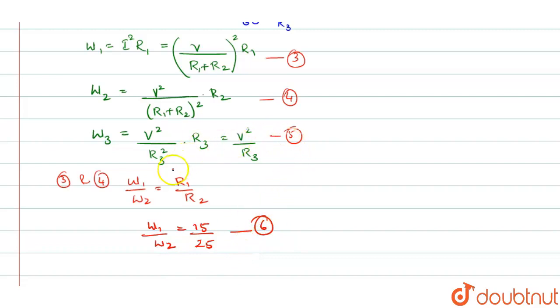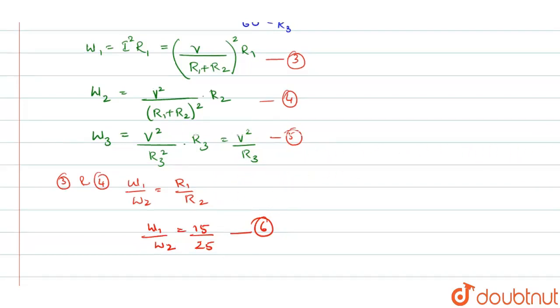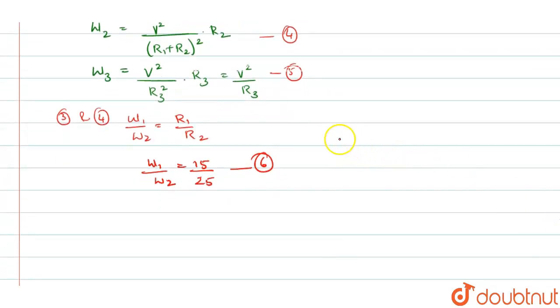Now, from equation 5 and 6, you can again write the values of W2 and W3 and from that, from 4 and 5, you can write it for W2 by W3 ratio, which will be equal to 15 by 25.